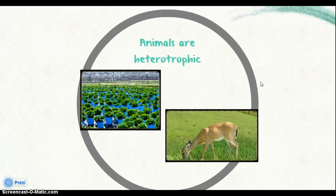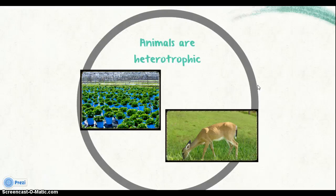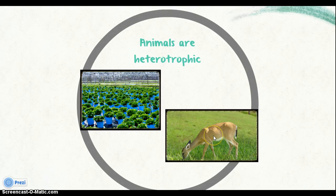The second characteristic is that animals are heterotrophic, while plants are autotrophic. Heterotrophs are organisms that ingest other organic matter for nutrition and energy, and autotrophs are organisms that can make their own food, making them primary producers. In this picture, the deer is absorbing nutrition and energy by eating the grass, while the plants get their energy from the sun.